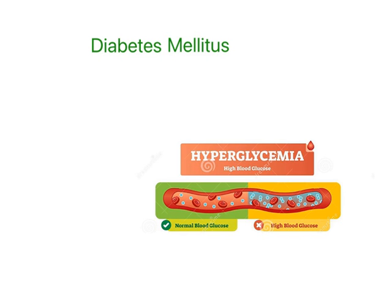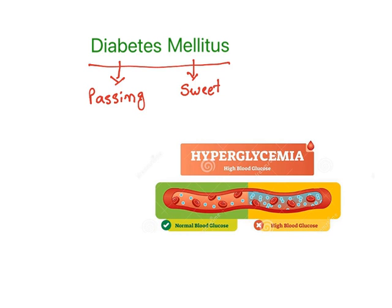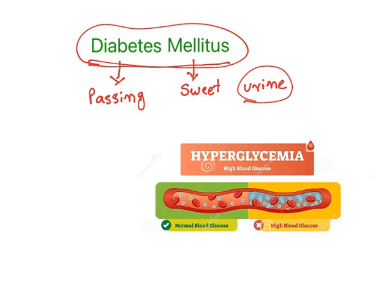Let's get into the topic. First let us understand what the term stands for. Diabetes means passing or going across. Mellitus means sweet, sweet like honey. Literally it means passing sweet urine. So diabetes mellitus, as the name — it is a Greek word — indicates passing sweet urine. That means people who suffer with diabetes mellitus will pass a lot of urine which is sweet in nature.